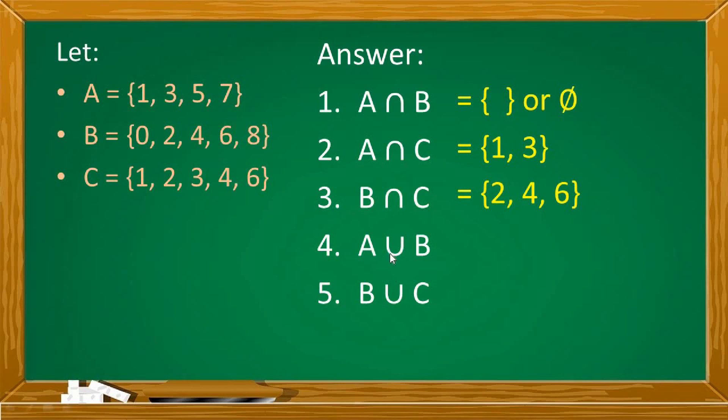Next number 4. Set A union set B. Icocombine lang natin lahat ng elements ni A at B na walang nauulit. And i-arrange din natin in ascending order from least to greatest mula sa pinakamababa pataas. So we have 0, 1, 2, 3, 4, 5, 6, 7, and 8. Pinagsama lang lahat ng elements ni A at ni B. At wala rin namang nauulit na elements, di ba?